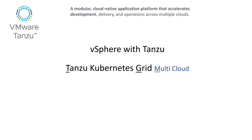Then we have Tanzu Kubernetes Grid Multi-Cloud, or TKGM. This one is a little controversial in calling it 'multi-cloud' — up until 2023, this version could be directly installed to AWS or Azure, but that's not the case anymore. When deploying TKGM, you require a bootstrap node and need to target a vCenter installation. The difference between vSphere with Tanzu and TKGM comes down to capabilities — for example, if you wanted to deploy Kubernetes to a VMware Telco Cloud or an edge site, TKGM is the recommended and supported solution.